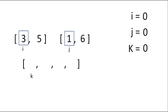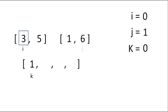i is the index of the left half, j is the index of the right half, and k is the index of our merged array. First we compare the element at i with the element at j to find the minimum, and add it to position k. In this case one is less, so we add one to our merged array, then increment j to move to the next index.